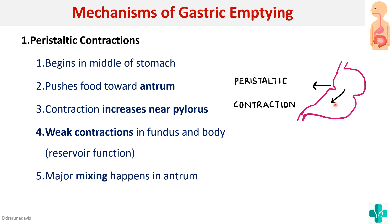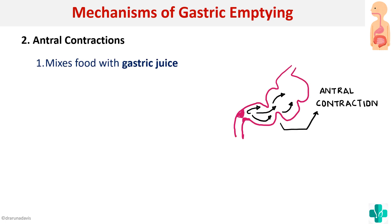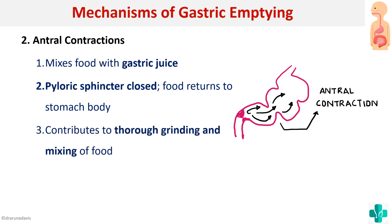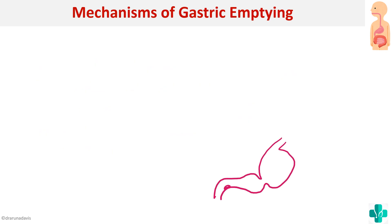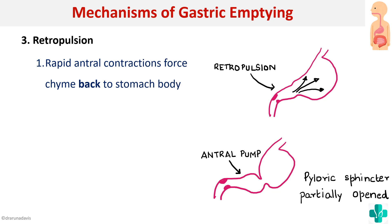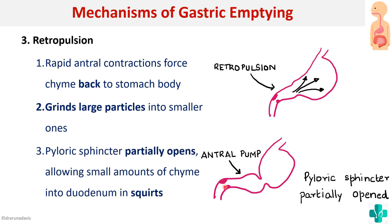The major mixing takes place in the antrum. During antral contraction, peristalsis becomes more powerful, mixing food with gastric juice. The pyloric sphincter is closed, so food returns to the stomach body, contributing to thorough grinding and mixing. In retropulsion, the rapid antral contraction forces chyme back to the stomach body, grinding large particles into smaller ones. Then the pyloric sphincter partially opens, allowing small amounts of chyme into the duodenum in squirts.